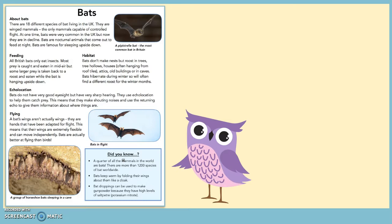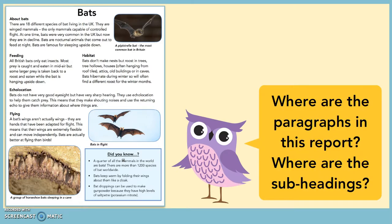What this means is we need to split the information up into paragraphs, and each of these paragraphs needs to have its own subheading, as you can see in the example on the screen, which you can also download from the website. Can you identify where the paragraphs are in this report and where the subheadings are? Think about the work you did in the previous session to help.